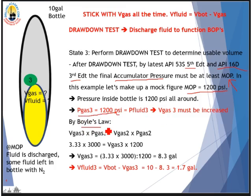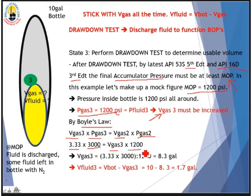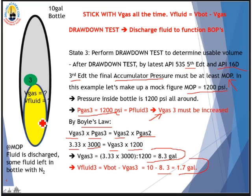By Boyle's Law, as pressure is reduced the volume increases. The equation is: V_gas3 × P_gas3 = V_gas2 × P_gas2. So 3.3 × 3000 = V_gas3 × 1200. Working that out, V_gas3 = 8.3 gallons. We then take the 10-gallon bottle minus 8.3 gallons of gas, leaving 1.7 gallons — the volume of fluid remaining at the minimum operating pressure state.